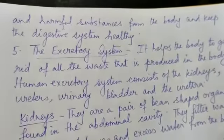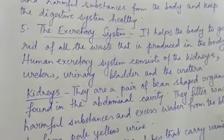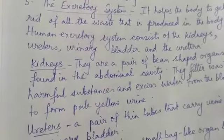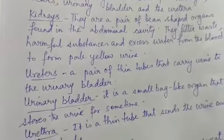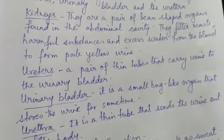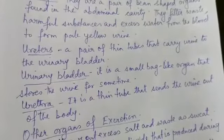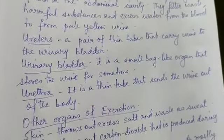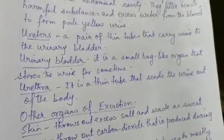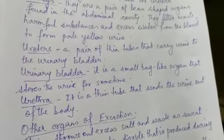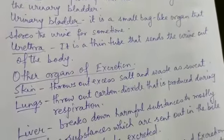Now let us learn about the excretory system. The excretory system helps the body to get rid of all the waste produced in the body. The human excretory system consists of the kidneys, ureters, urinary bladder and the urethra. The kidneys are a pair of bean-shaped organs in the abdominal cavity that filter waste, harmful substances and excess water from the blood to form pale yellow urine. The ureters are a pair of thin tubes that carry urine to the urinary bladder, which stores urine for some time. The urethra is a thin tube that sends the urine out of the body.